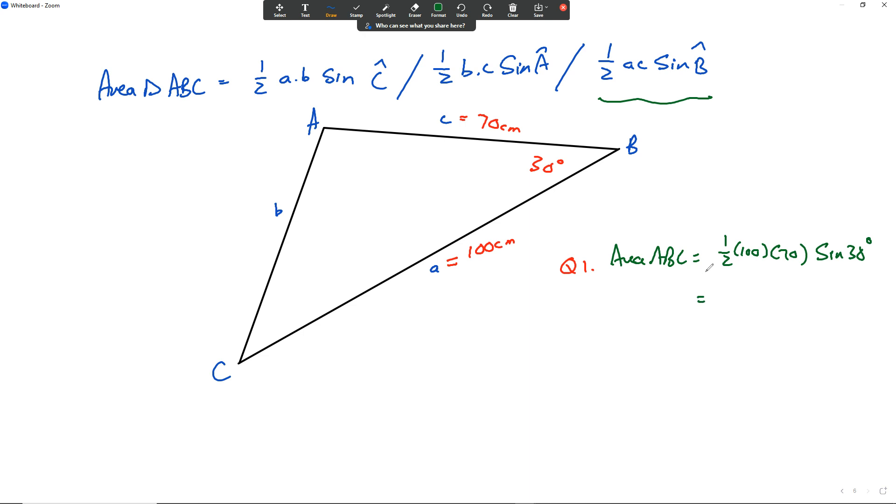This goes straight into a calculator. Press a half times 100 times 70 times sine 30 degrees, and that's pretty much it. 0.5 times 100 times 70 times sine 30. Make sure your calculator is in degrees mode, and then the answer will come to 1750 centimeters squared. You just found the area of a triangle, and it's not necessarily a right-angled triangle.